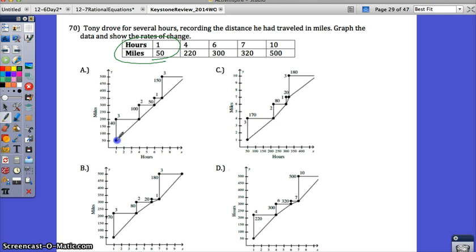One hour, 50 miles, that one's good. One hour, wait, this is 50 hours, one mile. Already we can rule out C. Check for the other ones. One hour, 50 miles. And one hour, 50 miles. I'm not just checking the placement of the point, but I'm checking it to the labels on the X and Y axis too.